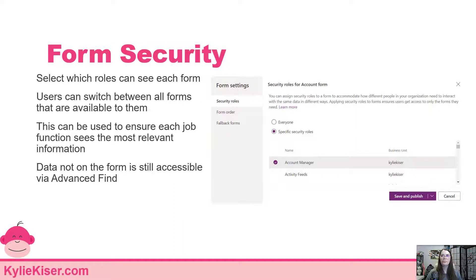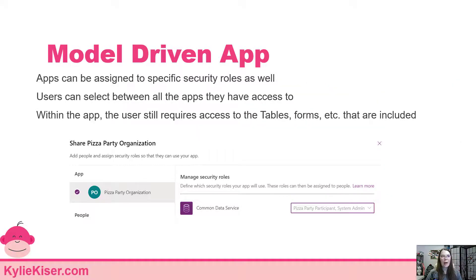We also have security on our model-driven apps. Once I've created my model-driven app, I can choose which security roles have access to it. This is another way to divide up your data — you could have different apps with different tables included, and users would have access to just the tables within that app. Keep in mind there are things they could probably see through Advanced Find, so you still want to be careful with your security roles. Also, just because a table has been added to the app does not mean users have access to it — their security role still needs access to all the particular components within the app.